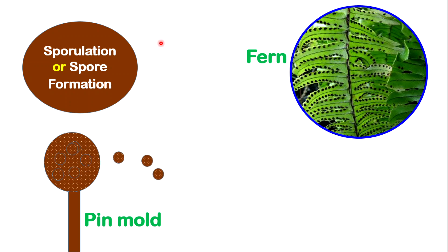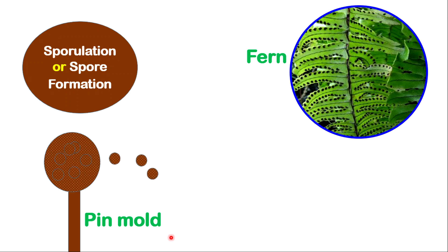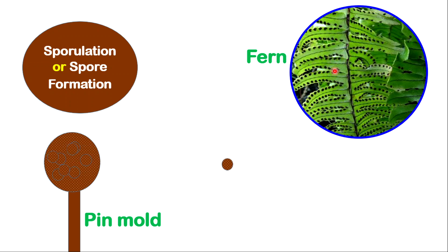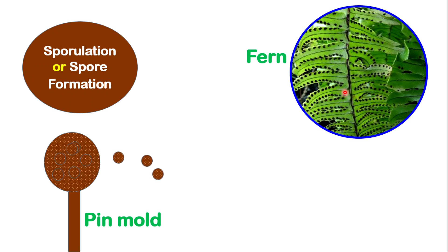Sporulation, otherwise called spore formation, is very popular among fungi such as the pin mold. You will see pin mold on bread after a while if it becomes stale; the pin mold will produce spores that eventually separate and germinate into new pin molds. Ferns also produce spores — if you look at the back of a fern leaflet, you will see some spores that will be dispersed by wind, water, or in some cases animals, and then germinate in different locations to produce more plants.